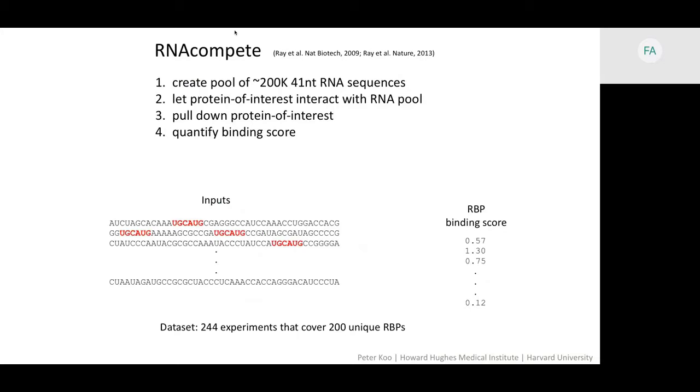There are 244 RNA-Compete experiments that cover over 200 unique RBPs, and this covers a wide range of RNA-binding protein families, so it's a very comprehensive data set.